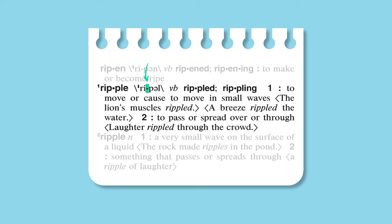Hyphens separate the word's syllables. As you can see, ripple has two syllables. The marks at the top or bottom of some parts of the pronunciation tell you that those syllables are stressed, or given more emphasis when spoken. The first syllable of ripple is stressed, so we say ripple, not ripple.